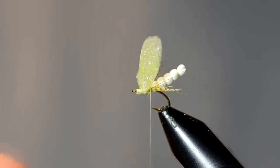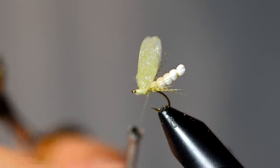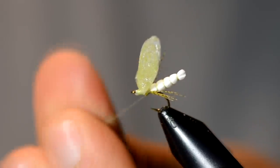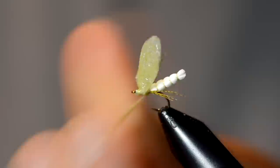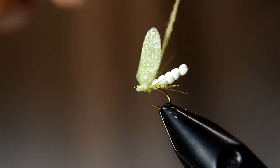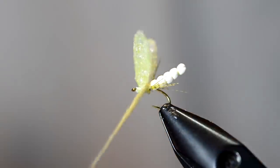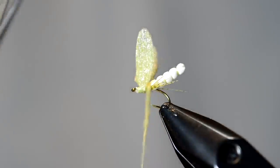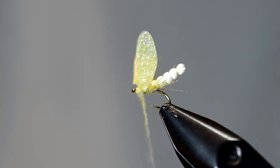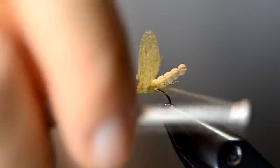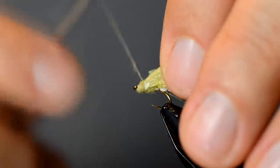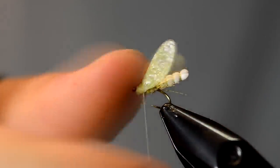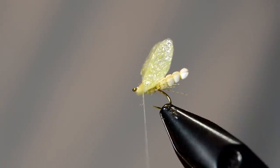First I'm going to grab some dubbing, this is just some PMD dubbing, and I'm going to use this to very lightly create my thorax. I just want to be careful not to bind down much of the stuff I've tied in there, and then add a figure eight and then again a pass in front of the wings to get that canted back like we want.